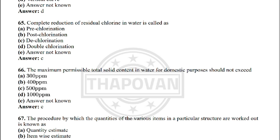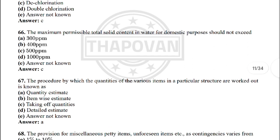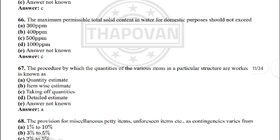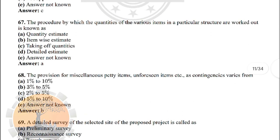Next: complete reduction of residual chlorine in water is called — option C: dechlorination. Next: maximum permissible total solids content in water for domestic purpose should not exceed — the correct answer is option C: 500 ppm.